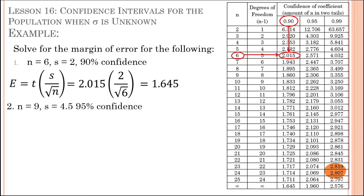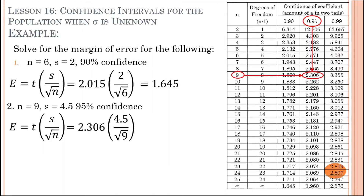Next, n equals 9, S equals 4.5, at 95% confidence. Using the same formula, first get the t-value: find n equals 9 and 95% confidence — the intersection is 2.306. That is the t-value. With S equals 4.5 and n equals 9, direct substitution gives a margin of error of 3.459.